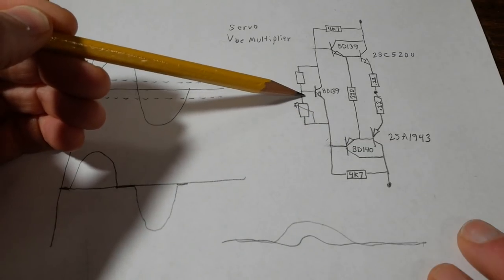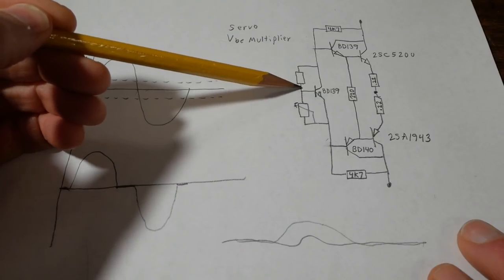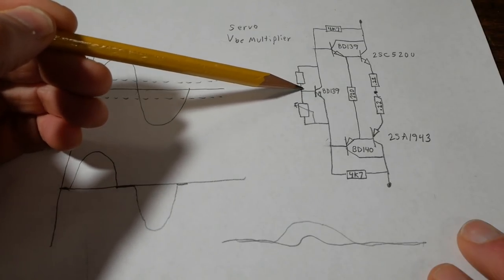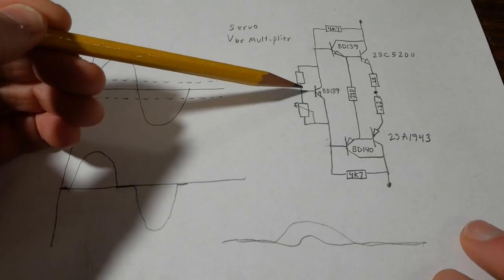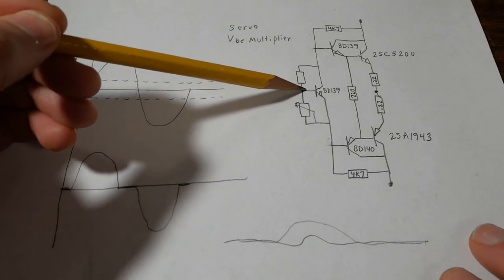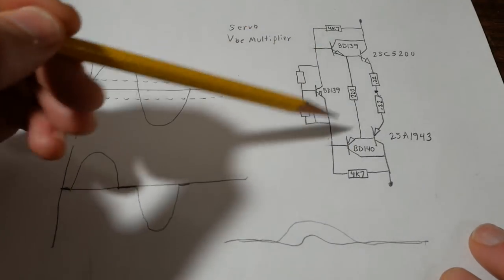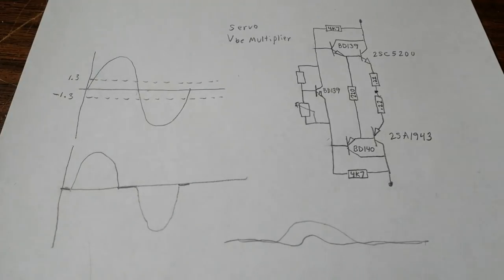Sometimes you see the potentiometer or trimmer connected at this point. You know the wiper arm goes to the base. That for the same reason that's not a good idea because if the base goes open this transistor turns off and you get full current in your output stage and things go bang.